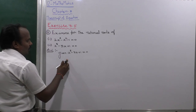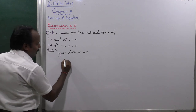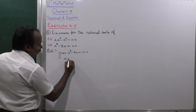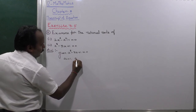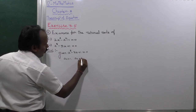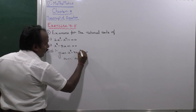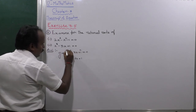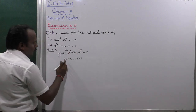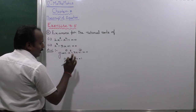By the form of our rational root theorem, the first number is a naught. A naught is equal to 1. The last number a_n is equal to 1. Those are the coefficients of the values — a naught is equal to 1, a_n is equal to 1.